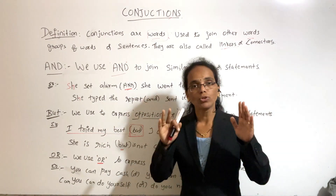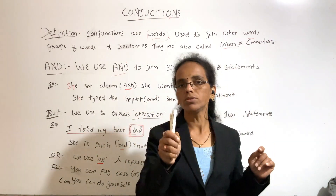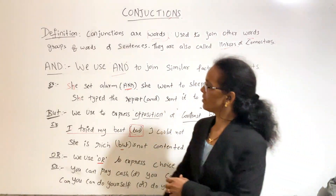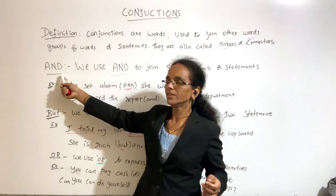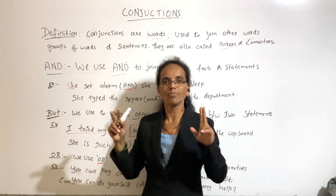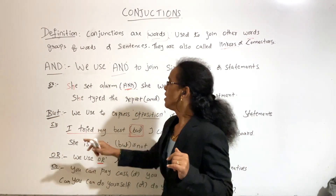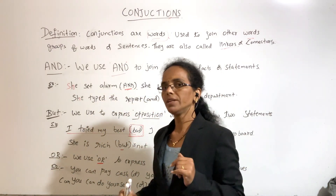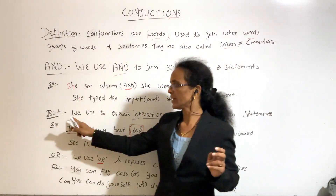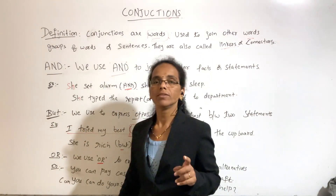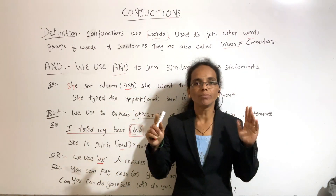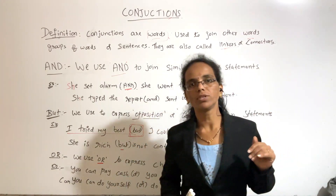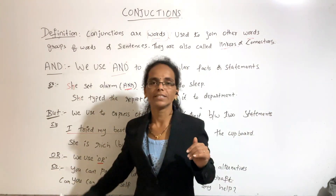So when we have two options and need to choose only one, we use OR as a conjunction. To revise: AND is for two similar facts or statements; BUT is for one positive and one negative statement; and OR is for two options where we choose one.